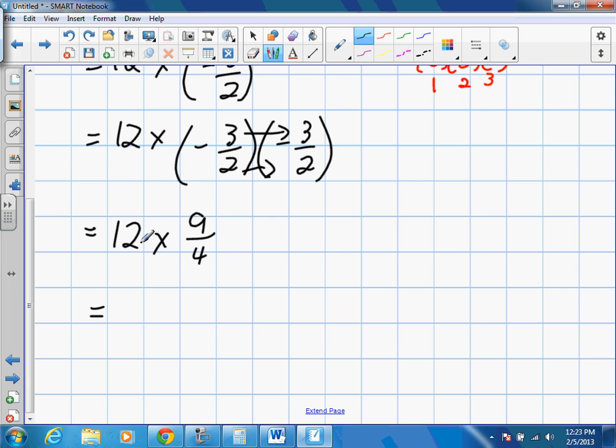And now from here, it's just multiplication again. I'm going to turn that 12 into a fraction, 12 over 1. And we just multiply the top by the top, bottom by the bottom. 9 by 12, 108 over 4. Can I simplify that?